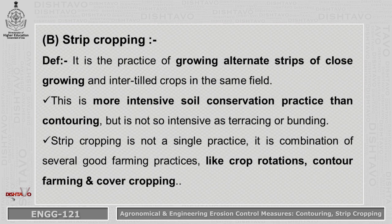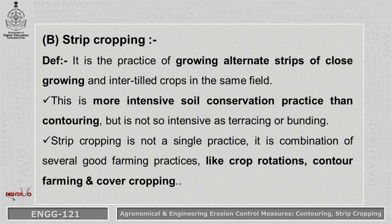The next agronomical practice is Strip Cropping. It is the practice of growing alternate strips of close-growing and inter-tilled crops in the same field. This is a more intensive soil conservation practice than contouring, but not as intensive as terracing or bunding, which are engineering practices. Strip cropping is not a single practice; it is a combination of practices like crop rotation, contour farming, or cover cropping.